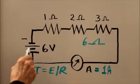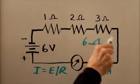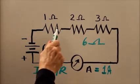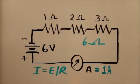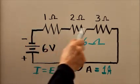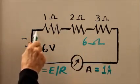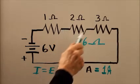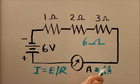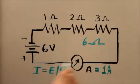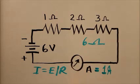Now this current is going to be the same at every point in the circuit. The current through each resistor is 1 amp. Everywhere we go — even inside the battery — the current is always going to be 1 ampere, because in a series circuit the current is the same at every point.